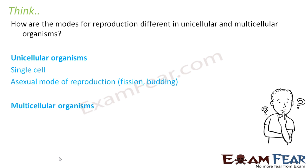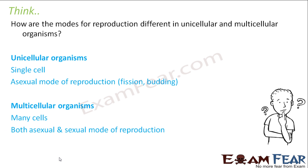In multicellular organisms, they are made up of many cells grouped together to perform specialized functions. So they can undergo both asexual as well as sexual modes of reproduction. Advanced multicellular organisms like human beings go for sexual mode, whereas simple plants and simple multicellular organisms like hydra, planaria, and tapeworms undergo asexual mode of reproduction as well.